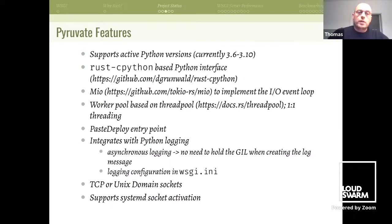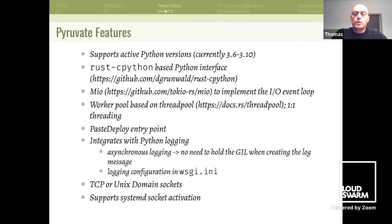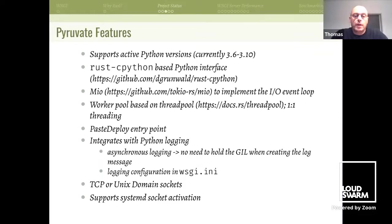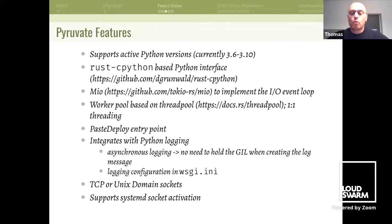A quick rundown on the features. Pyruvate supports active Python versions — currently Python 3.6 through 3.10. It has a Rust/CPython-based Python interface. I'm using Mio (Metal I/O), which is a Rust crate that is part of the larger Tokio async Rust framework, to implement the I/O event loop. There's a worker pool — requests are accepted and then offloaded to the worker pool — and there's a paste deploy entry point.